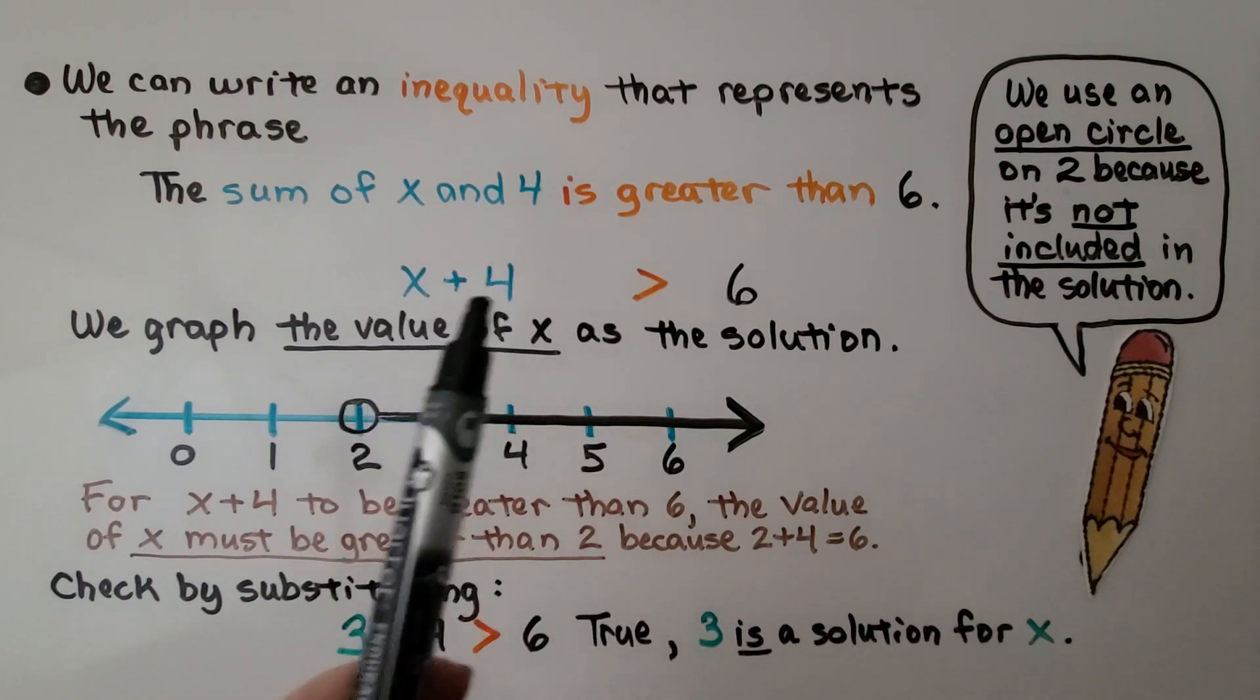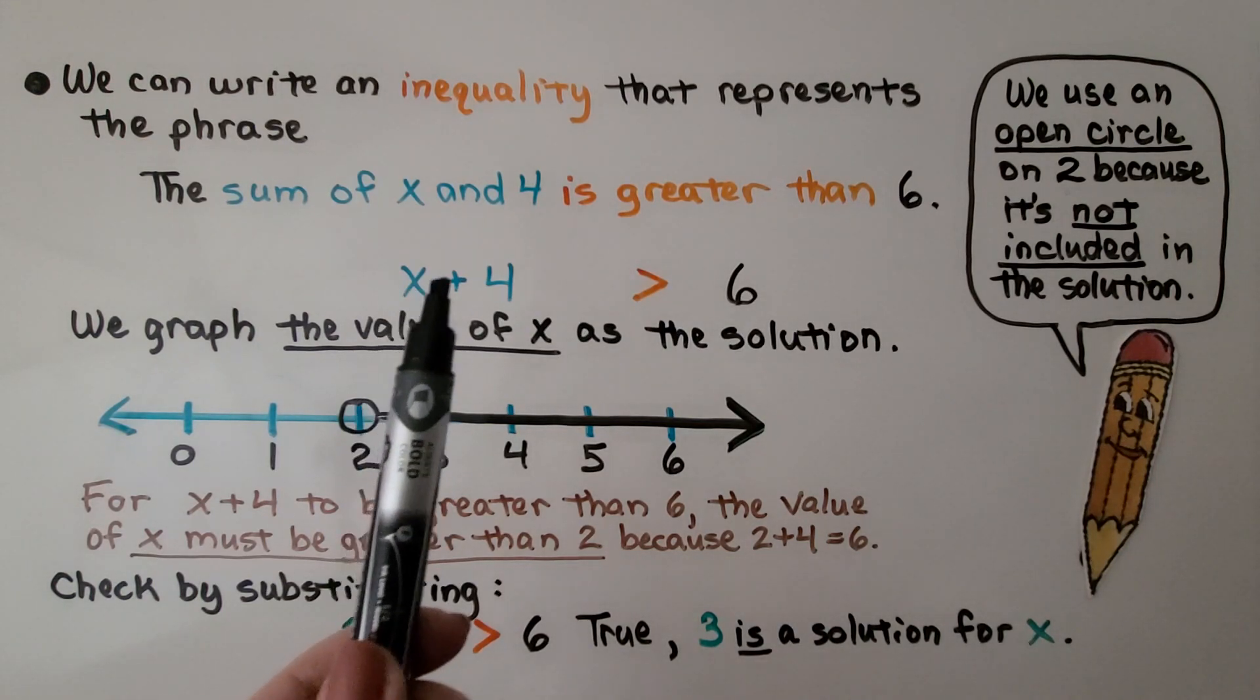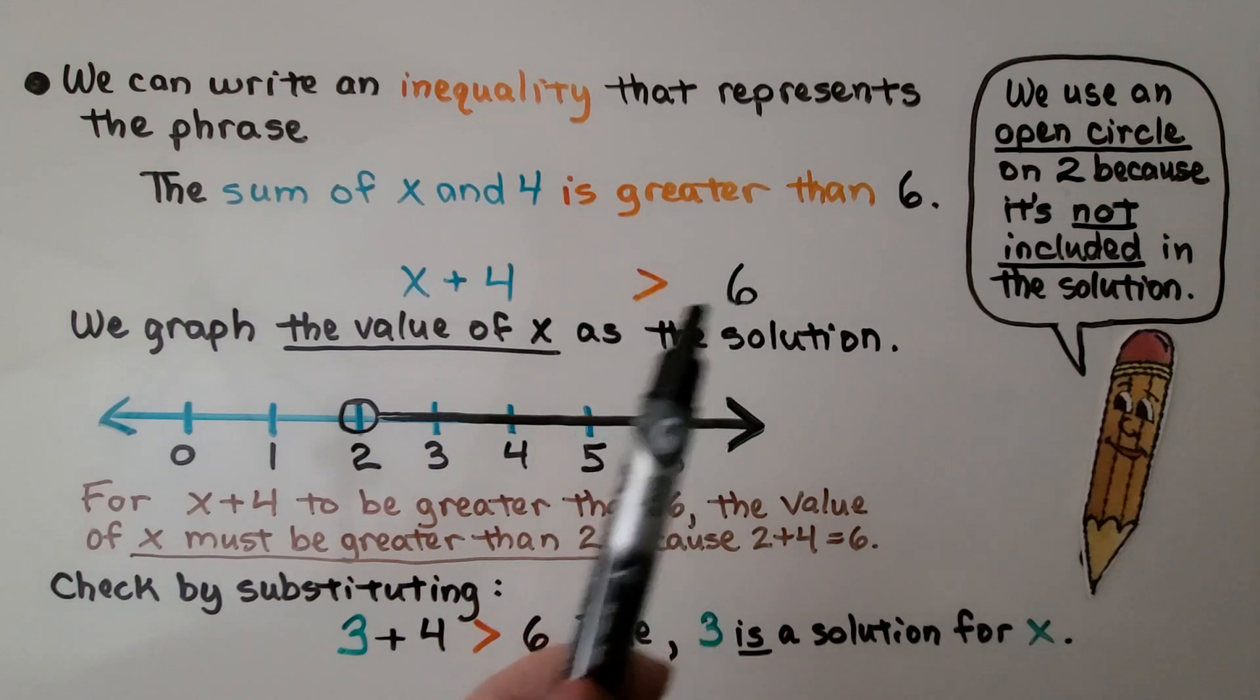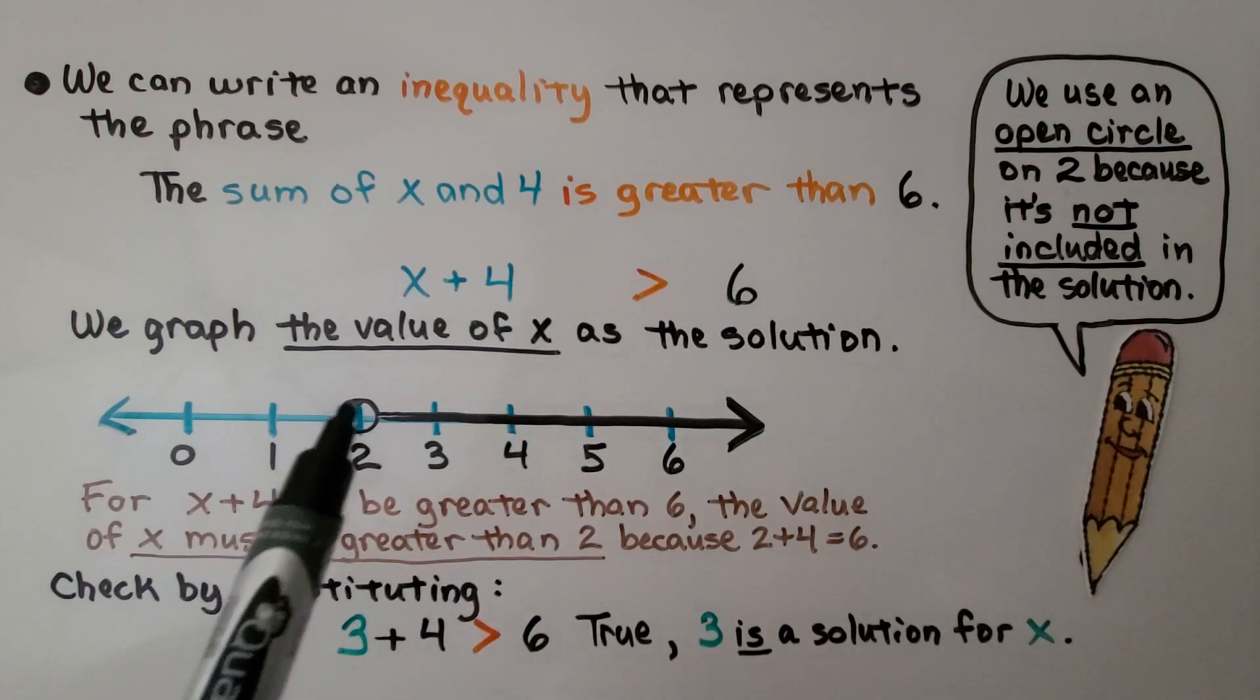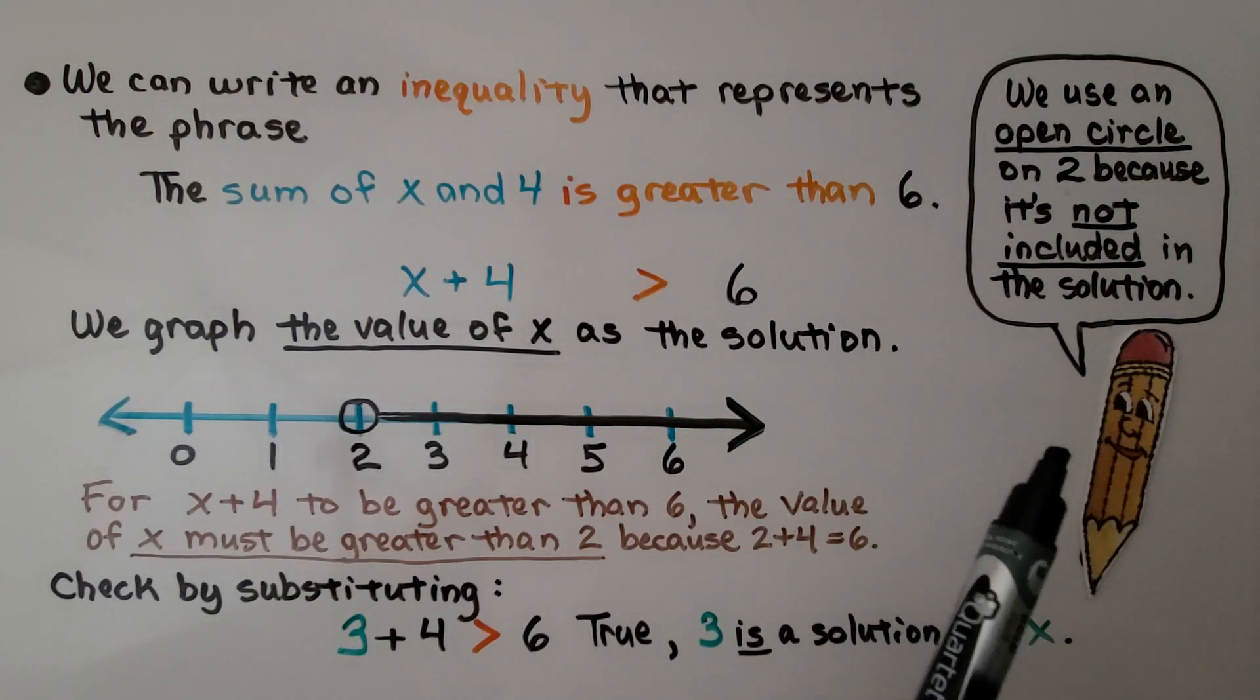We need this side to be greater than 6. For x plus 4 to be greater than 6, the value of x must be greater than 2, because 2 plus 4 is equal to 6. If this was 2, then this side would be equal to that side, not greater. So we're not going to include 2 in the solution. We're going to use an open circle on 2 because it's not included in the solution.